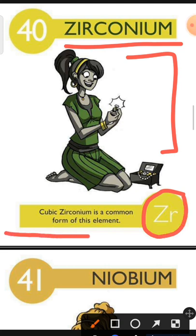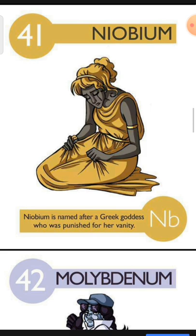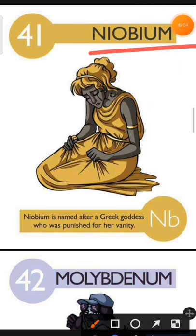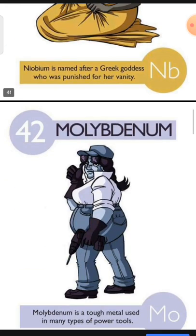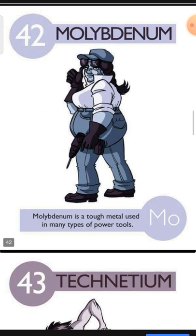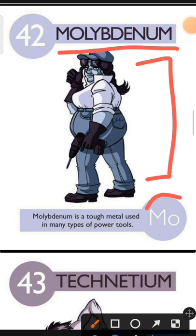Element number 41 is Niobium. The characteristic of Niobium is: Niobium is named after a Greek goddess who was punished for her vanity. Element number 42 is Molybdenum. The characteristic of Molybdenum is: Molybdenum is a tough metal used in many types of power tools.